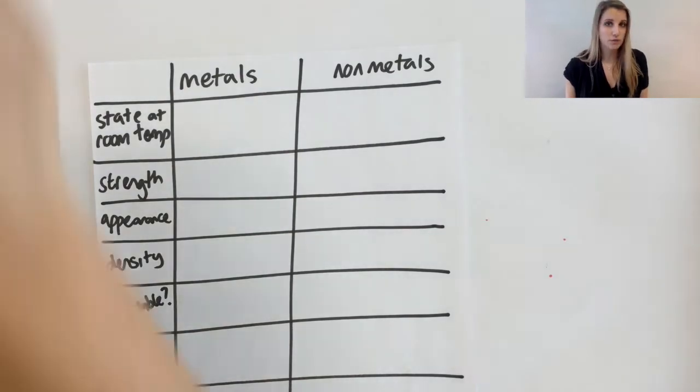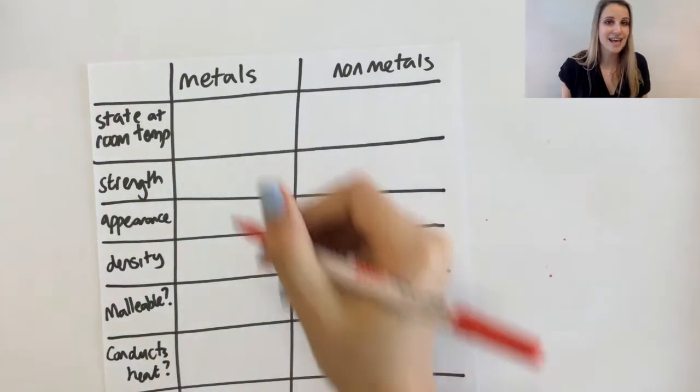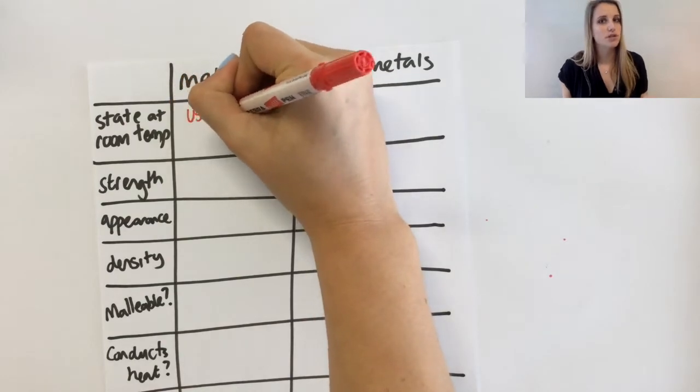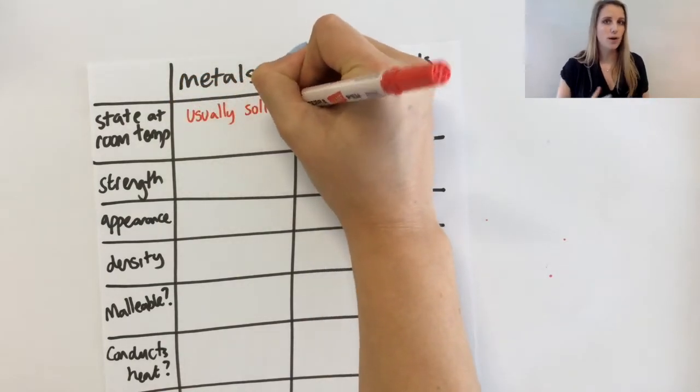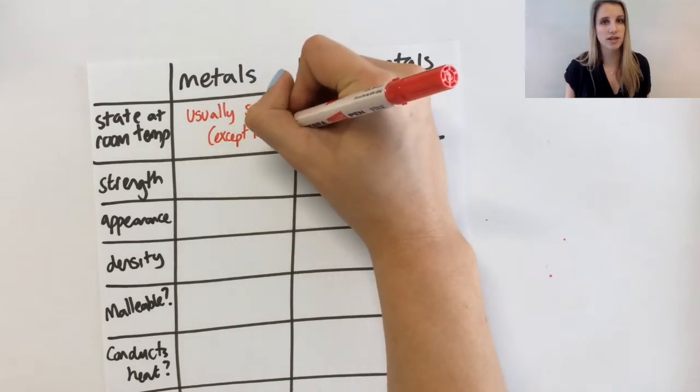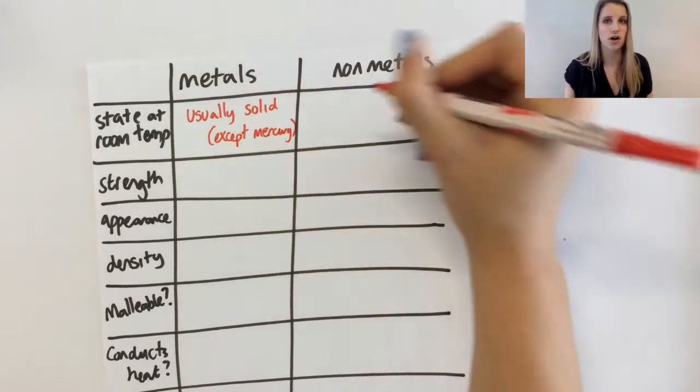Metals, hopefully through common sense, you know are normally solids at room temperature except mercury. Thinking about all the examples that we have, the vast majority of metals that you know in your day-to-day life are solids.